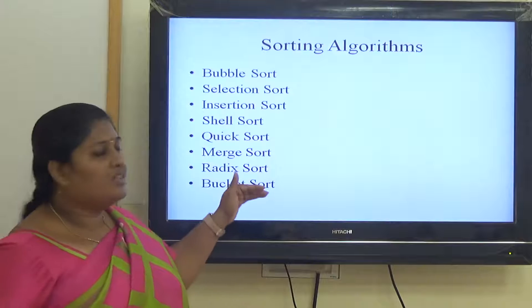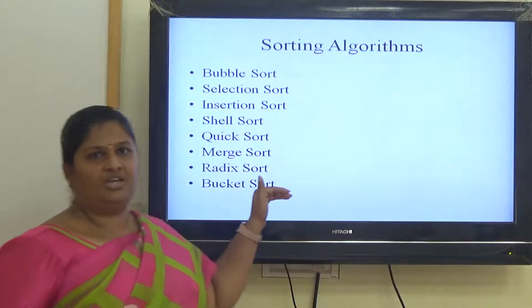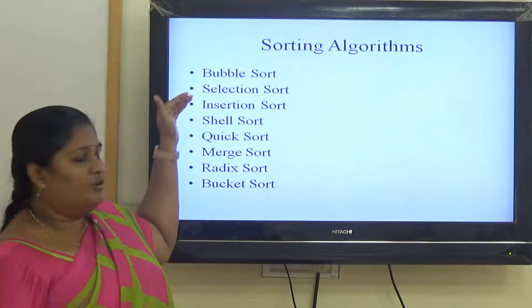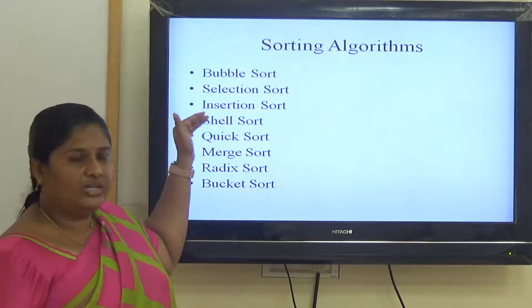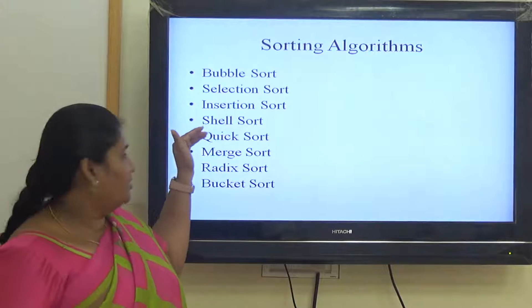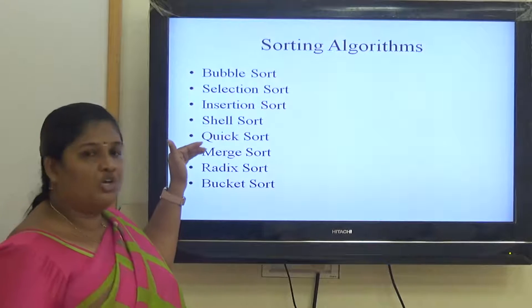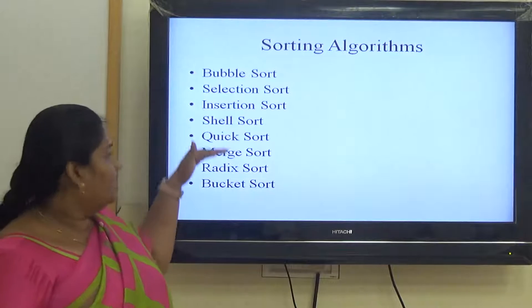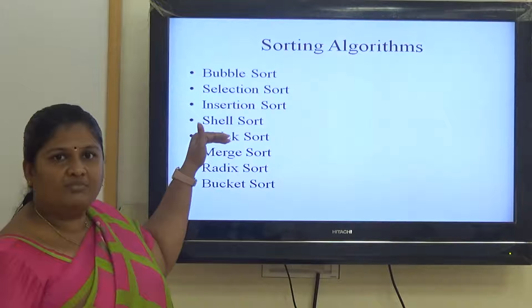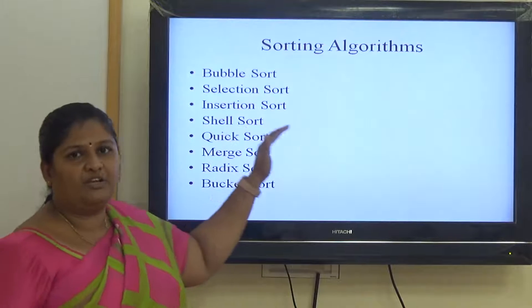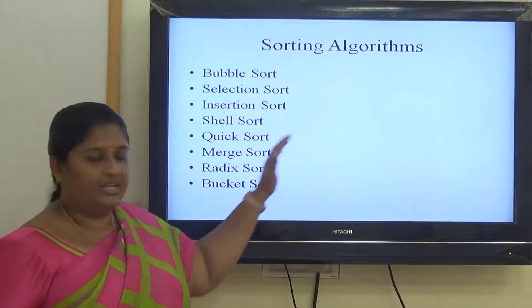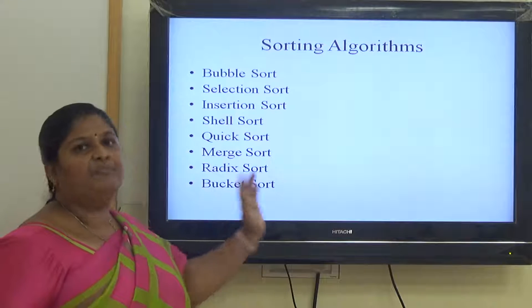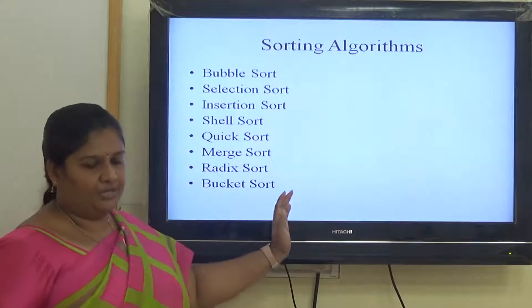These are some of the sorting algorithms we are going to see: Bubble sort, Selection sort, Insertion sort, Shell sort, Quick sort, Merge sort, Radix and Bucket. These first five sorting algorithms come under the category of internal sorting, and the last three algorithms come under external sorting.